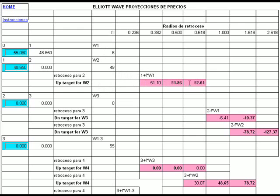We have 3 targets, and as we can see, 2 of them are highlighted. The targets that are highlighted are the most likely to take place. Our next pivot for wave 2 is 52.84. So wave 2 is about 4 in extension, and as we can see it exceeds just a little the higher target of 52.61. Now we have our 2 waves complete — wave 1 and wave 2.